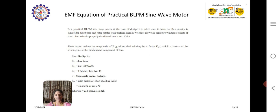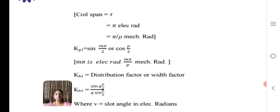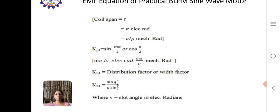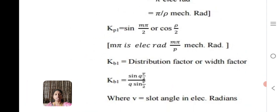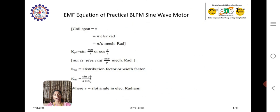Coming to Kd1 which is distribution factor or also called as breadth factor, the formula for Kd1 is sin q v by 2 divided by q sin v by 2, where v is the slot angle which is in unit electrical radians.